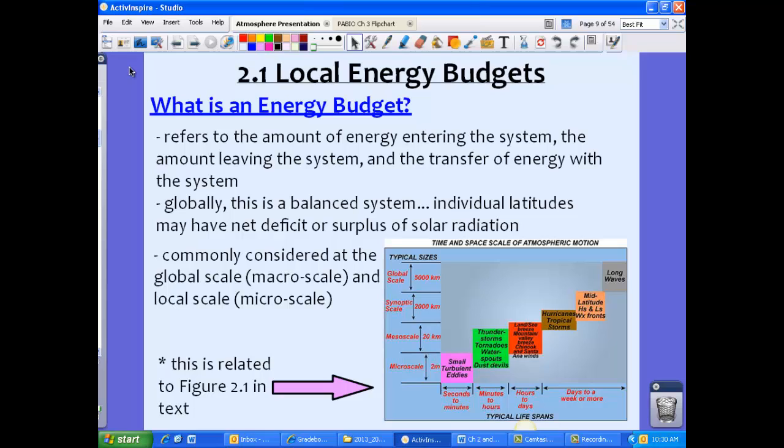So globally this is actually a balanced system. However, individual latitudes may have a net deficit or surplus of solar radiation. Think of the poles. They are going to have a net deficit. More energy actually leaves than comes in. This is due to the sun angle and a variety of other things. Whereas the equator has a net surplus. The sun actually gives so much more energy to here, not a lot leaves. So there's a net surplus at this point. So globally it's balanced, but certain latitudes might have a net deficit or surplus.